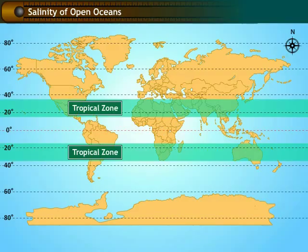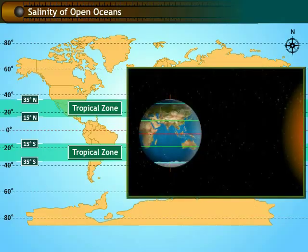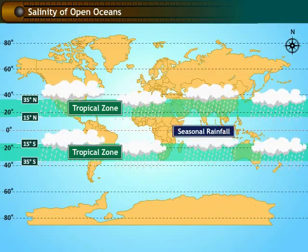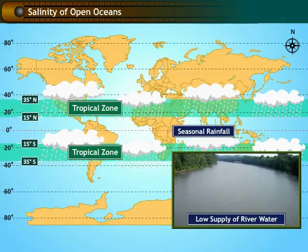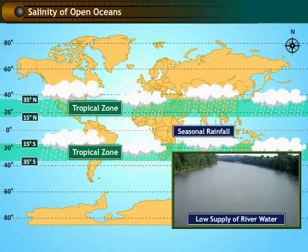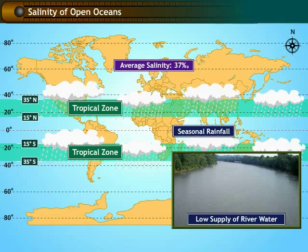The tropical region lies between 15 degrees and 35 degrees north and south of the equator and receives a medium amount of sunlight. This region has seasonal rainfall with very few rivers emptying themselves into the ocean. The salinity in the tropical region is very high, with an average of 37 parts per thousand.